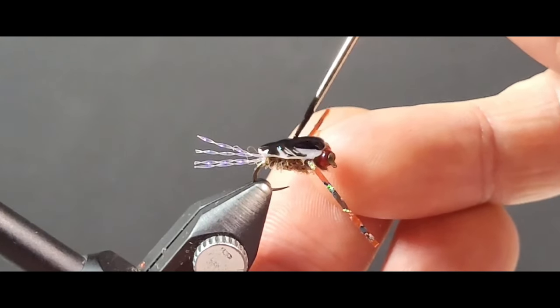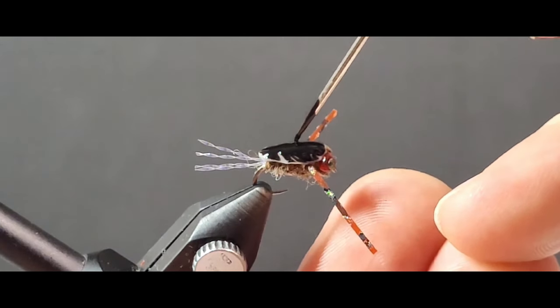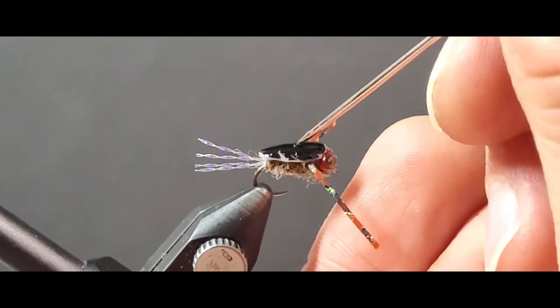You can have some fun with pistachio shell backs as well. Fill up your box with a few of those and you've got a couple of alternatives, whether or not you want to get that back swimmer down under the surface a bit or if you want that to ride on top depending on what the trout are taking.